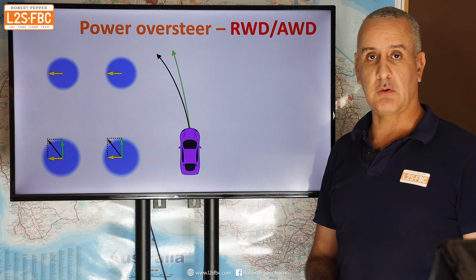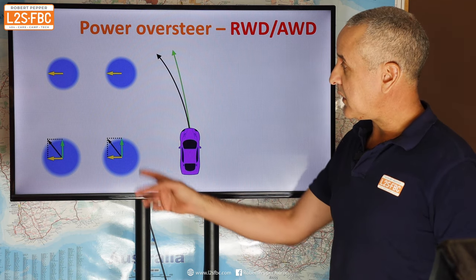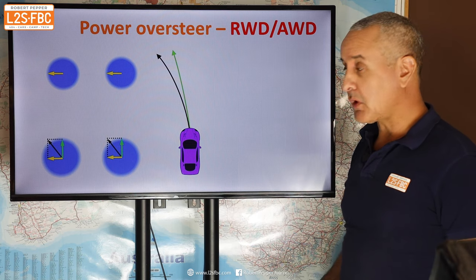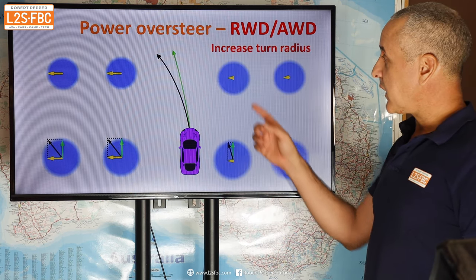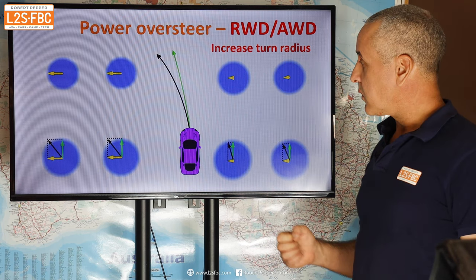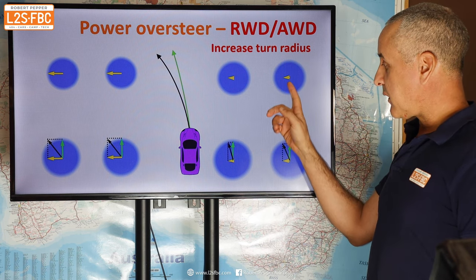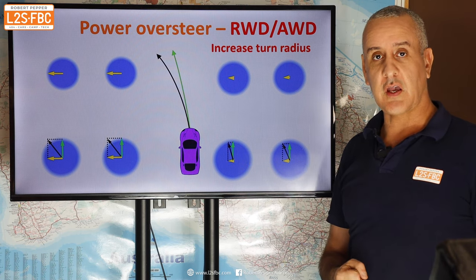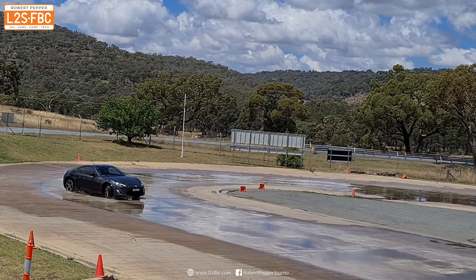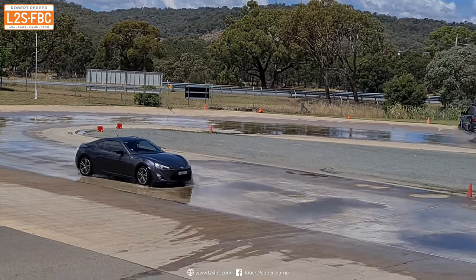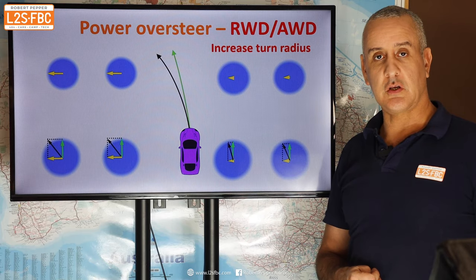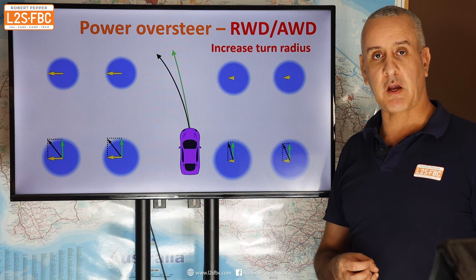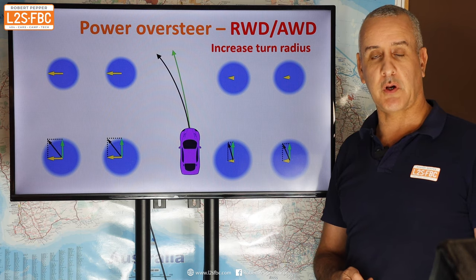Here's another way to fix power-on oversteer. Going around a corner and accelerating, instead of reducing power we increase the turn radius — reducing the amount of turning force required. You can see that allows us to maintain the same acceleration and still bring the traction demand back within the traction limits. So to fix power-on oversteer, you can either reduce the power, increase the turning radius, or a combination of both.